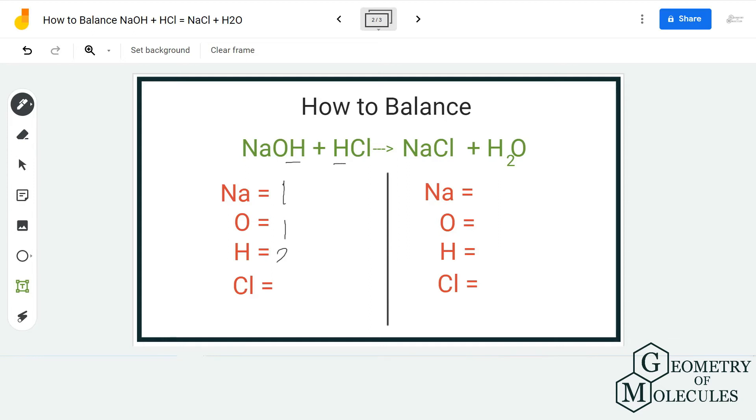When you move forward to the product side, we have one sodium atom, one oxygen atom, two hydrogen atoms, and one chlorine atom. So if you look at the number of atoms on both reactant and product side, this equation is already balanced.